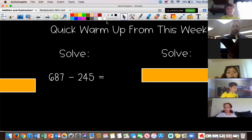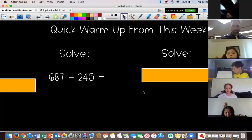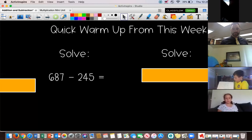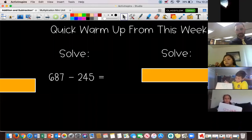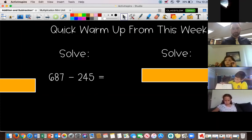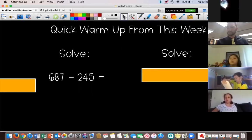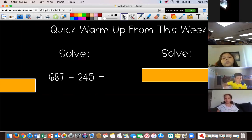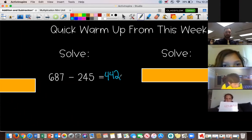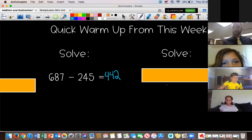All right, Corbin. Go ahead and explain to us how you solved that problem. Unmute yourself, Corbin. I did standard algorithm and I did seven minus five equals two, eight minus four equals four, six minus two equals four, and I got four hundred and forty-two. Great job. Thank you, Corbin. So he did subtracting using the standard algorithm.